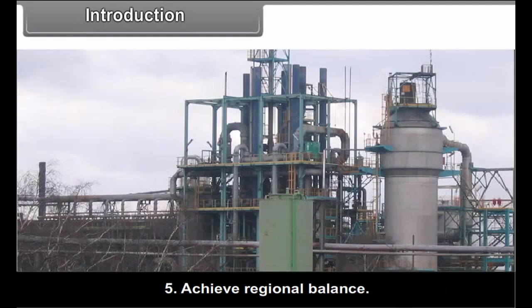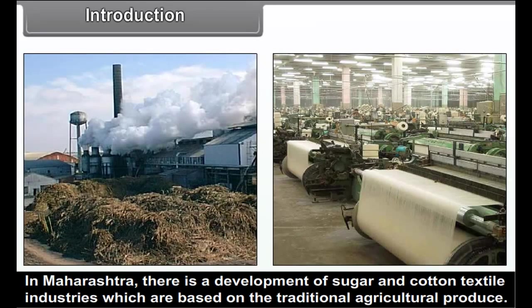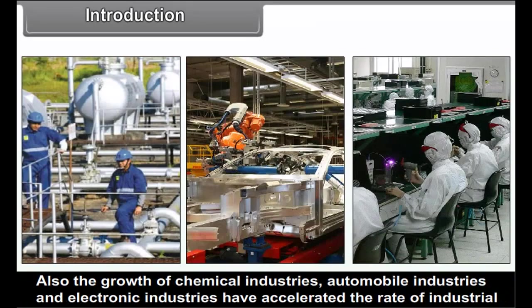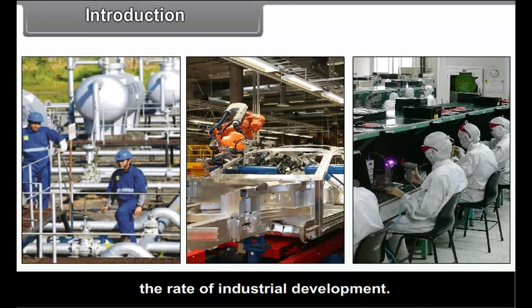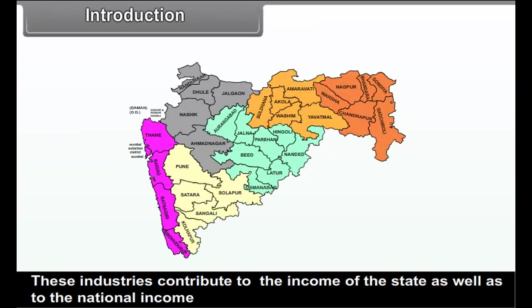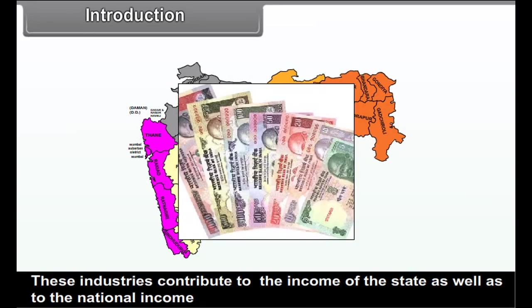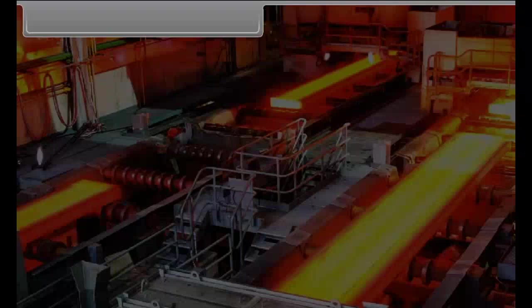To achieve regional balance in Maharashtra, there is development of sugar and cotton textile industries which are based on traditional agricultural produce. Also, the growth of chemical industries, automobile industries and electronic industries have accelerated the rate of industrial development. These industries contribute to the income of the state as well as to the national income and provide employment to the people of the state.